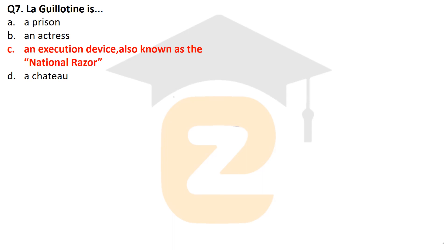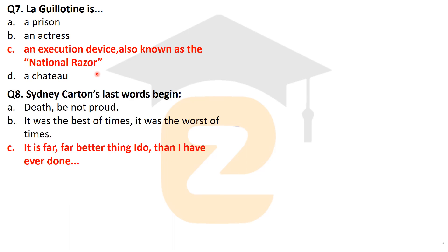The next question: La Guillotine was an execution device also known as the 'national razor.' This device was used during the time of the French Revolution in Paris. It was a kind of device used to behead victims of the French Revolution, and it was famously known by the name 'national razor.'